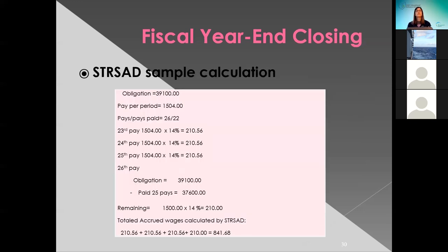Here's a screenshot of a sample calculation. It takes the obligation and the pay period. At the time when they run the STRS advance, the 26 could be out of 22 or maybe 21. Then it decides what they're paid on the 23rd, 24th, and 25th pay, and also what the 26th remaining will be.